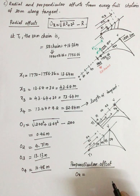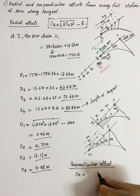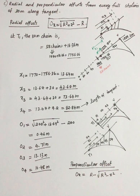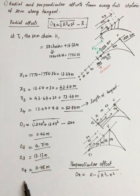The equation to find the ordinate using perpendicular offset is just the opposite: O = R − √(R² − X²). Substituting X1, X2, X3, and X4 into this formula gives you the perpendicular offsets. That completes the solution for both radial and perpendicular offset ordinates.